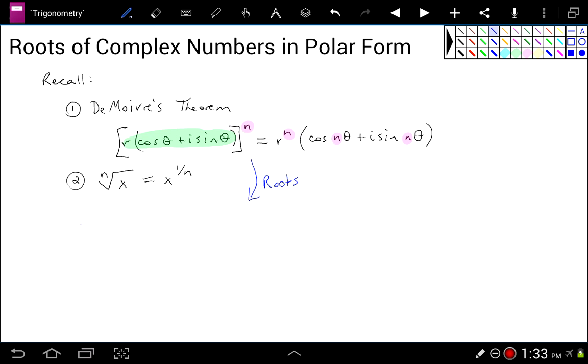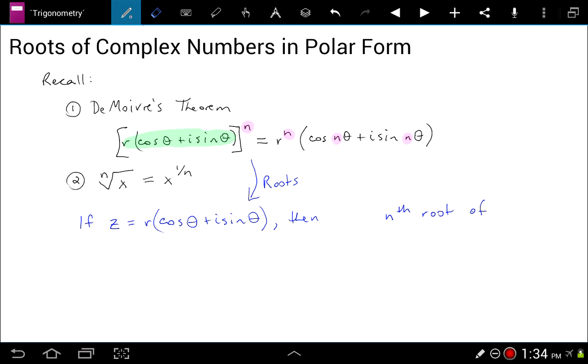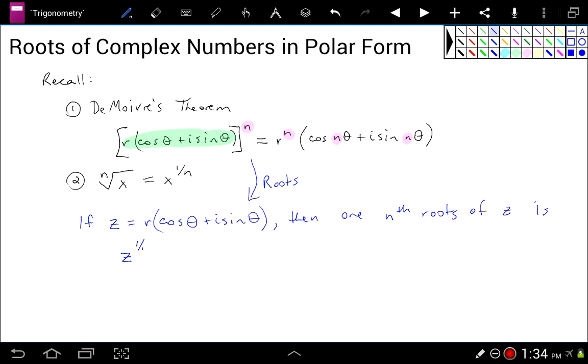So let's say if z is r cosine theta plus i sine theta, this complex number, then what is an nth root of z? And let's use a better word than an, let's use the word one, because we'll see that it has many. Then one of the nth roots of z is, well that would be z to the 1 over n to have an nth root of z. But z is just this complex number here in polar form, so I could take that whole thing and raise it to the 1 over n power.